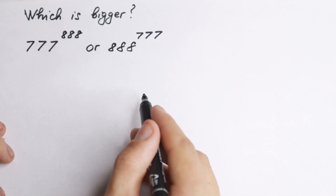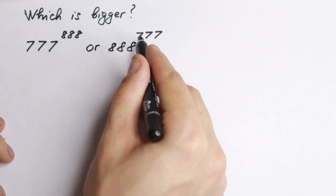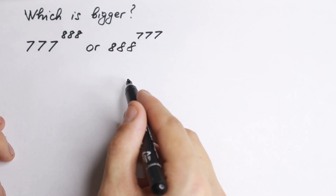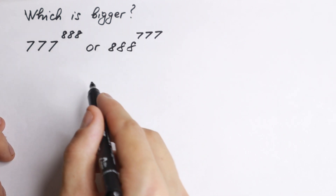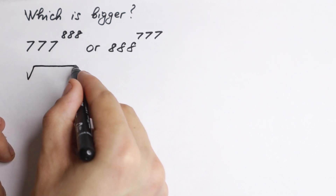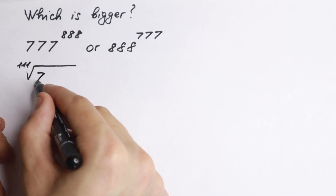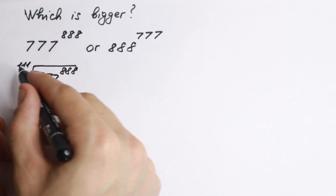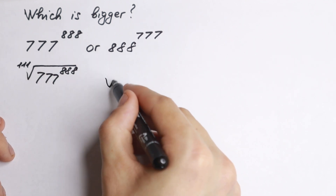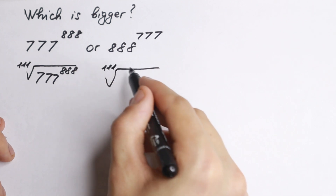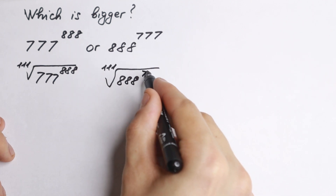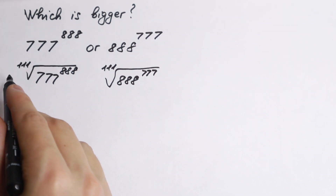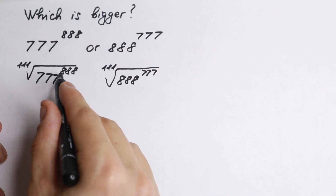Let's start with a really interesting trick right now. 888 and 777 can both be divided by 111. So if we take the 111th root from the left side and also the 111th root from the right hand side, we get one really interesting result, because we can write this 111th root as a denominator in the exponent.